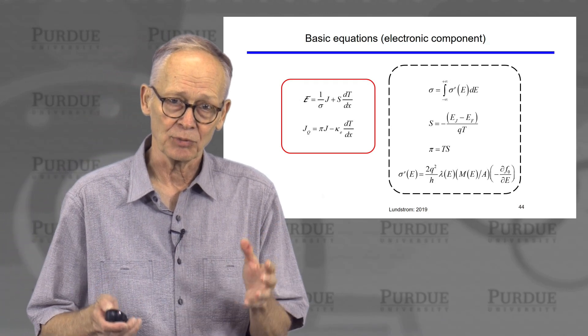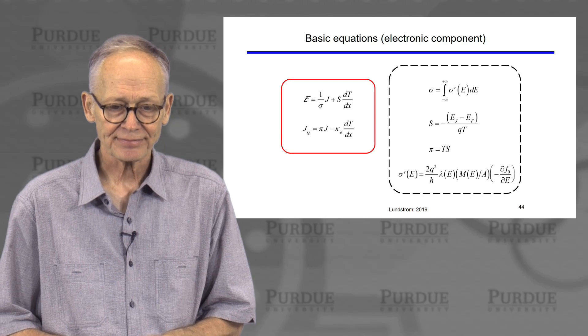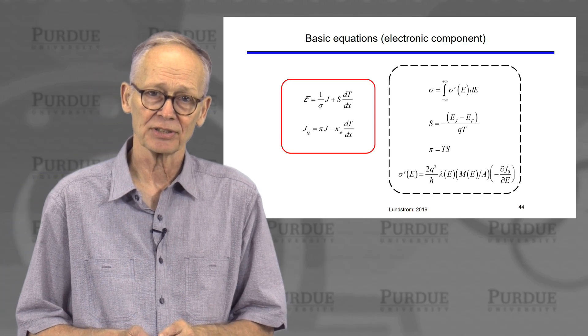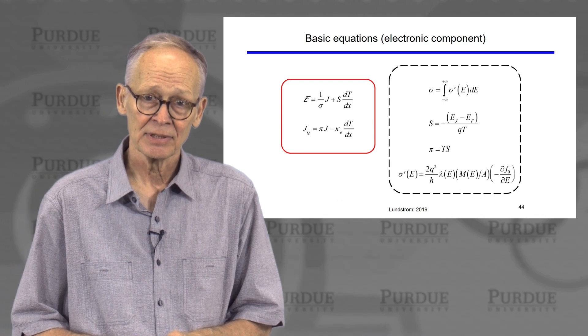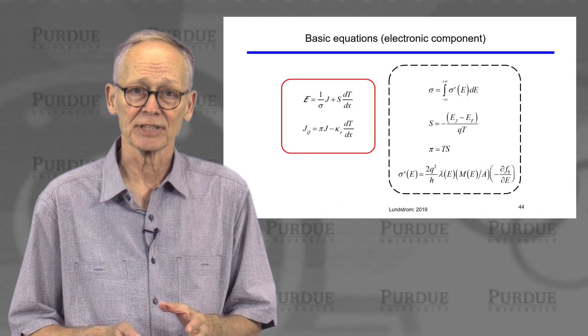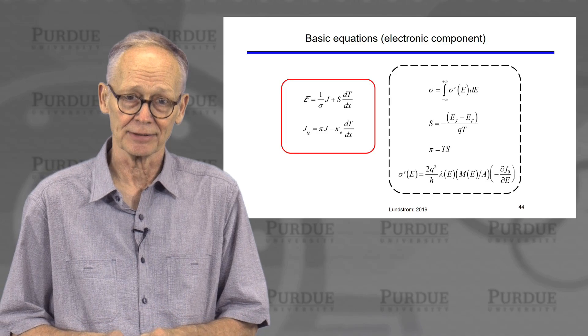All right. So we have now done three of the four transport coefficients. The next transport coefficient to consider is the electronic thermal conductivity, which tells us how heat flows in response to a temperature gradient.